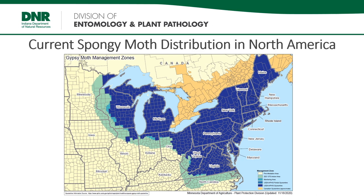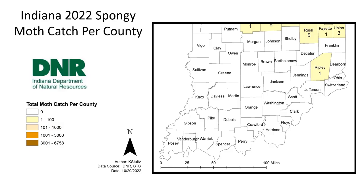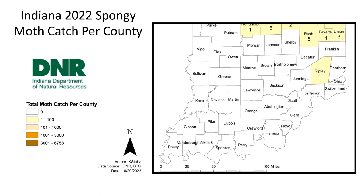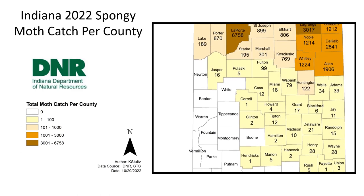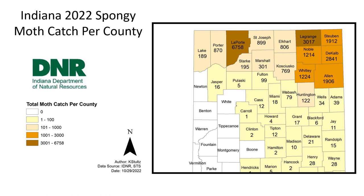Today, Spongy Moth can be found across the Northeast and Midwest states and in several Canadian provinces. The dark blue and dark orange areas are generally infested with Spongy Moth. The light green areas are action zones where Spongy Moths are actively managed by the Slow Spread Program. Occasionally Spongy Moth is found in the tan areas, which become a high priority for eradication. This map of 2022 moth catches demonstrates that while Spongy Moth is occasionally found in southern Indiana counties, they are strongly established in northern Indiana.